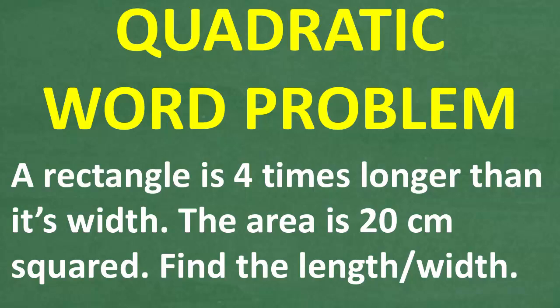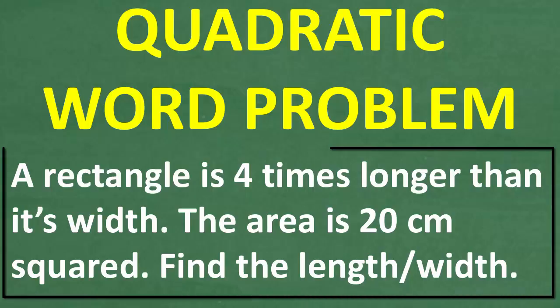Let's go ahead and practice solving quadratic equation word problems. Here is the specific problem we're going to be working on. A rectangle is four times longer than its width. The area of this rectangle is 20 centimeters squared. We want to find the length and width of the rectangle.